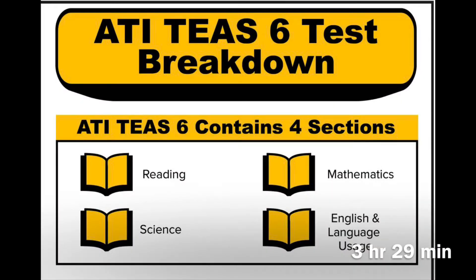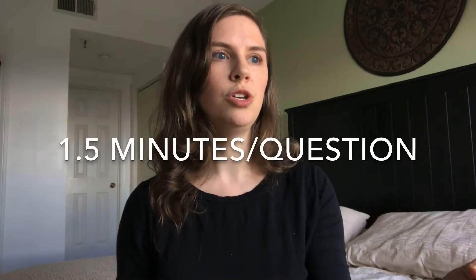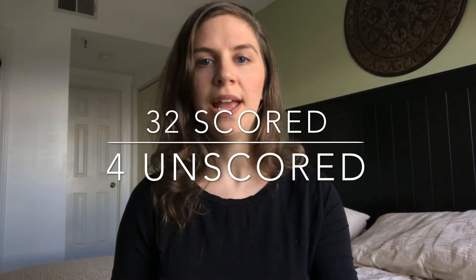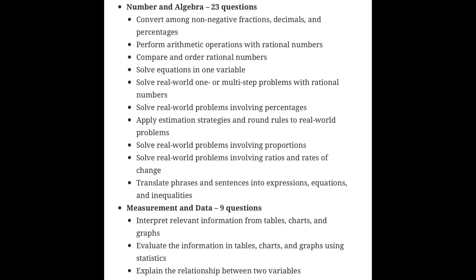So the total of the TEAS test, you're given three hours and 29 minutes to complete all the sections. On the math section, you're given 54 minutes to answer 36 questions. That breaks down to about a minute and a half per question. Out of those 36 questions, 32 of them will be scored and four of them will be unscored. You're not going to know which ones are scored and which are unscored, so make sure that you put your best effort into all the questions. There are two subcontent areas on the math section: numbers and algebra, and measurement and data.